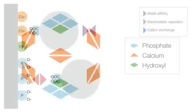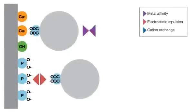This diagram demonstrates the interaction of carboxyl groups and CHT. Note the metal affinity interaction between CHT C-sites and carboxyl groups, and the repulsion of carboxyl groups from P-sites.